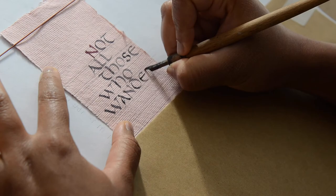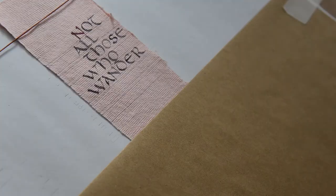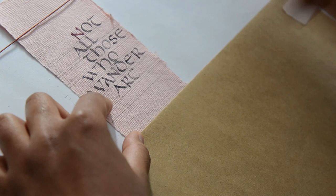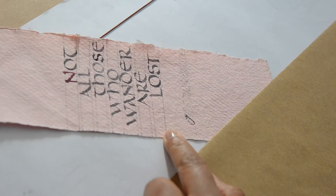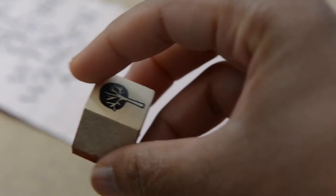Traditionally you would write the main text in black sumi ink with the first letter for some contrast in a waterproof red. Here I'm using iron gall which is also waterproof and a Rohrer and Klingner waterproof bordeaux colored ink for the first initial.